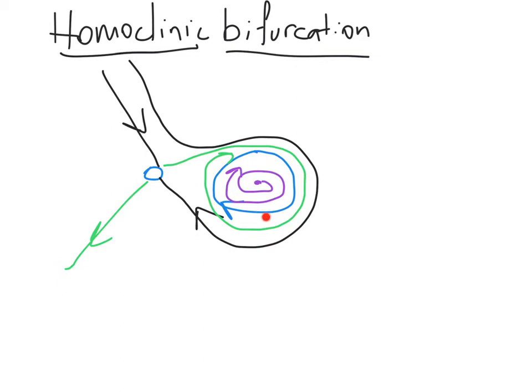And then after the bifurcation, this limit cycle is just going to be gone. It's not going to be there anymore. And we'll have just this unstable fixed point remaining. So here we are before the bifurcation.